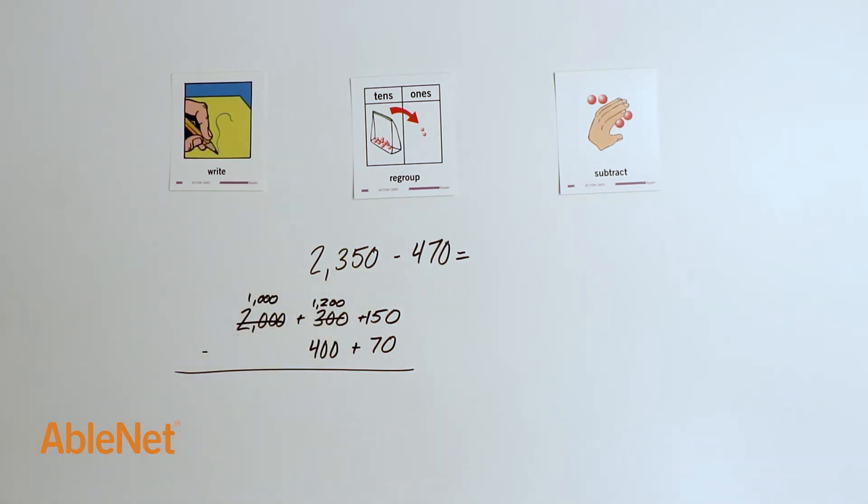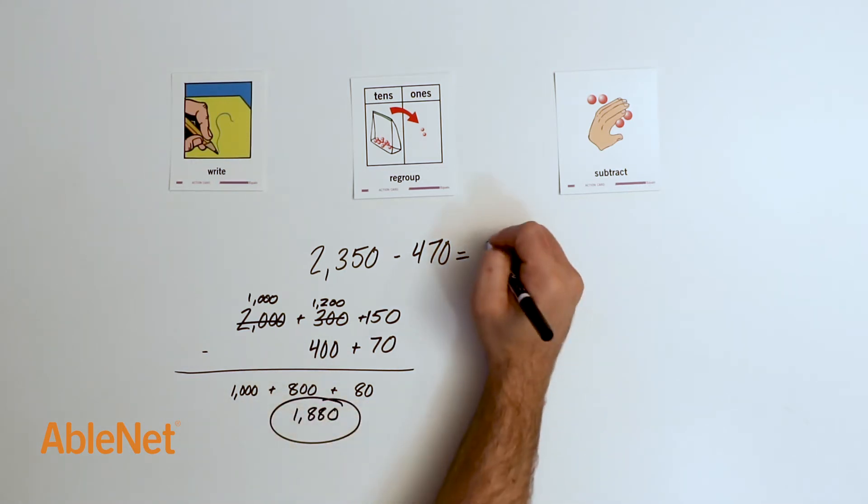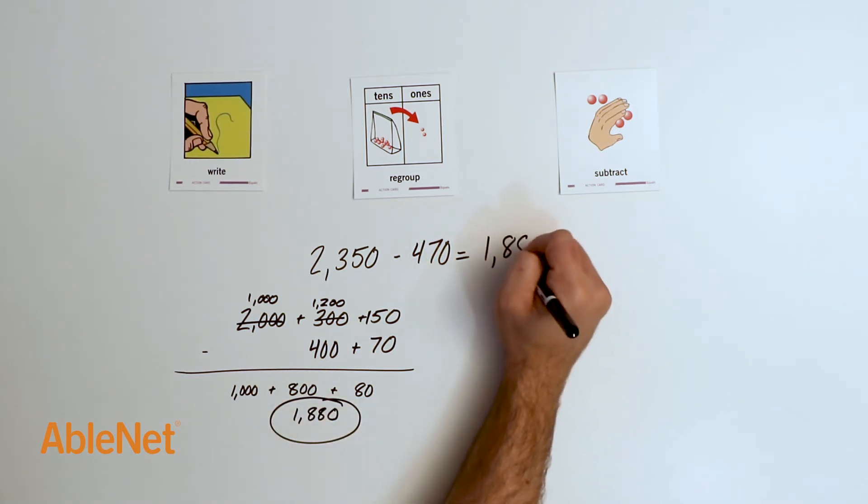Now that I have regrouped, I can subtract beginning with the thousands. 1,000 take away 0 is 1,000, 1,200 take away 400 is 800, 150 take away 70 is 80. Our answer is 1,880. Karen has 1,880 shirts left.